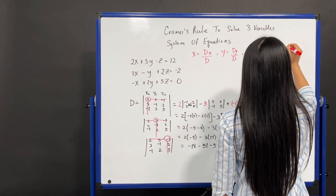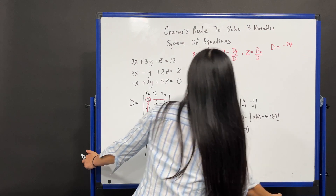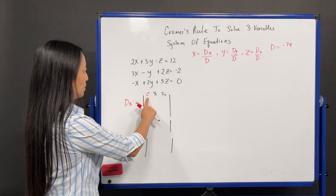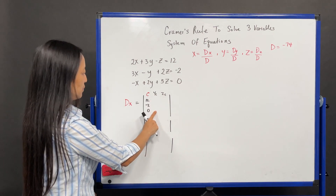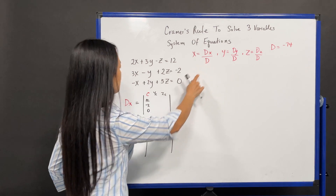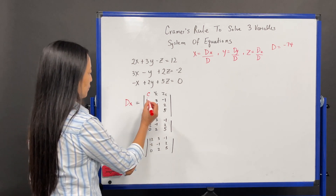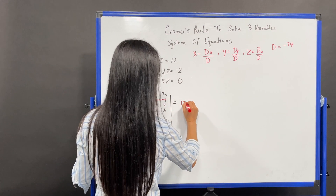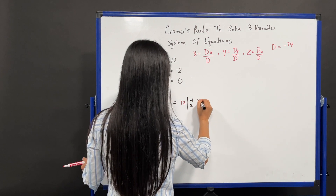D is equal to negative 74. Now let's solve for D of x. For D of x, in the first column where the x coefficient used to live, we're going to replace that with our constants: 12, negative 2, and 0. The y coefficient is going to be in the second column, and the z coefficient will be in the third column, same as when we were solving for the determinant. I've made two copies of the same matrix. So our first term, we take the first number and draw lines across the same row and same column. We get 12 times the 2 by 2 matrix: negative 1, 2, 2, 5.